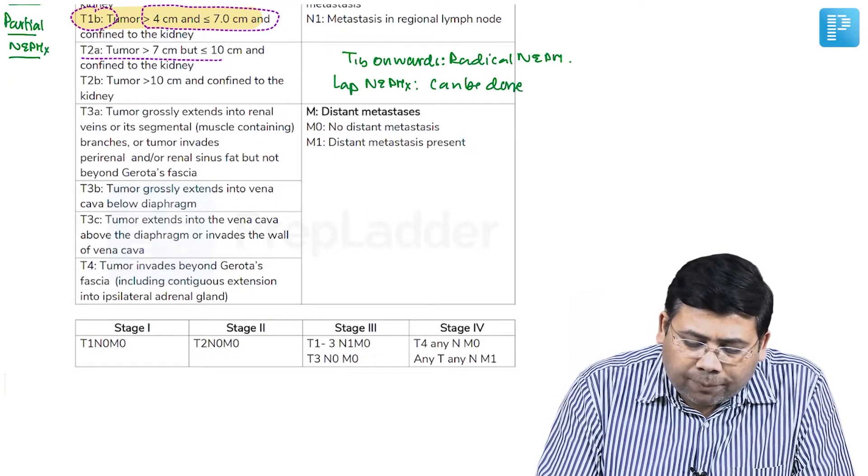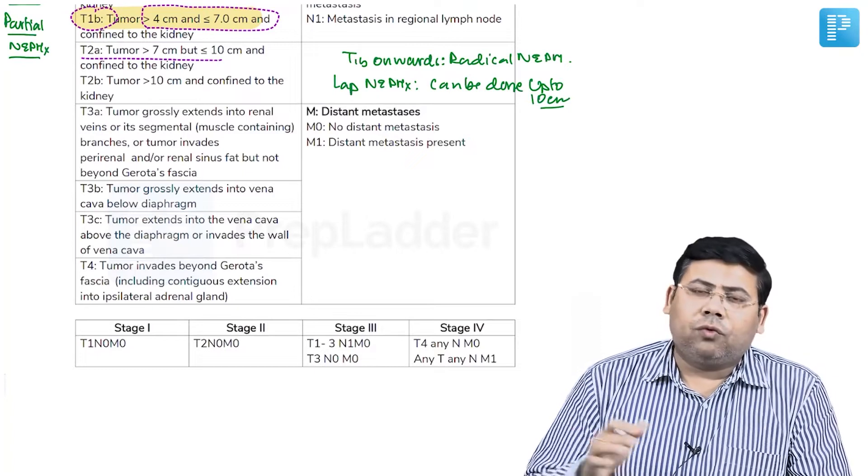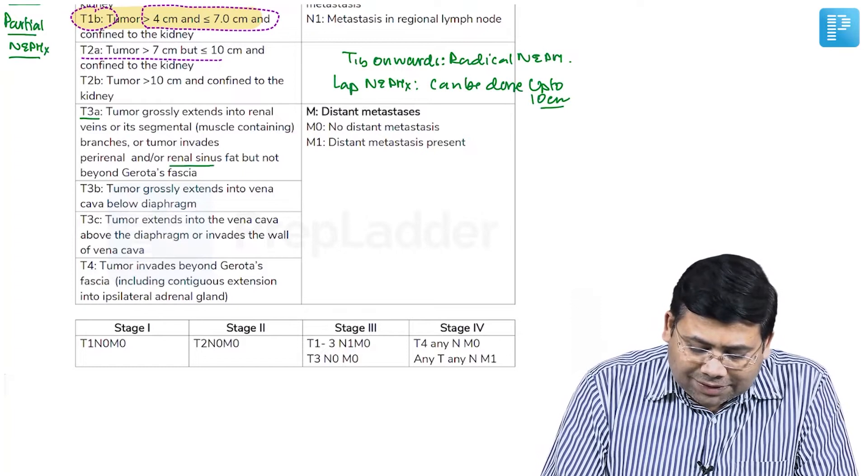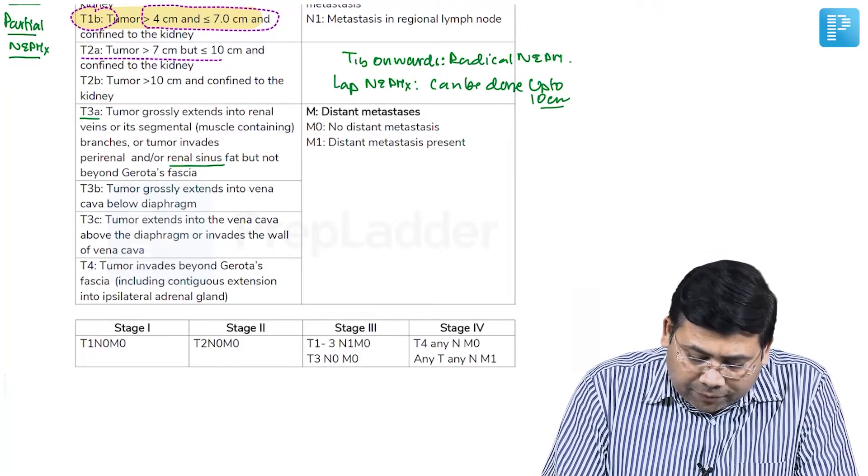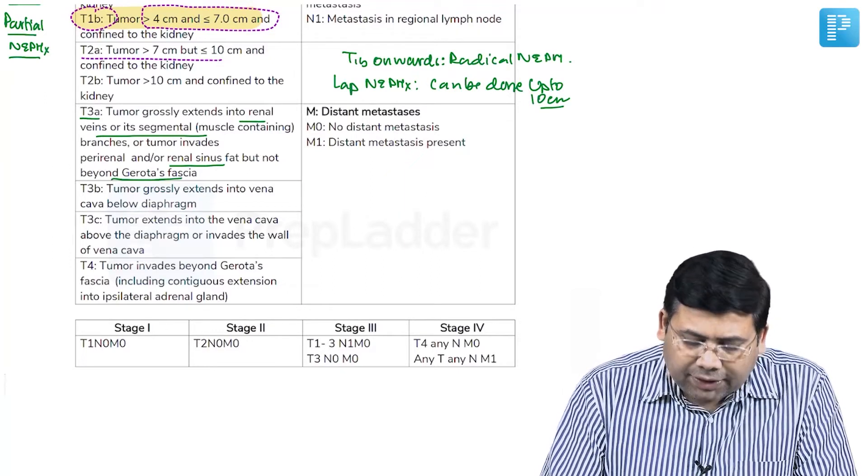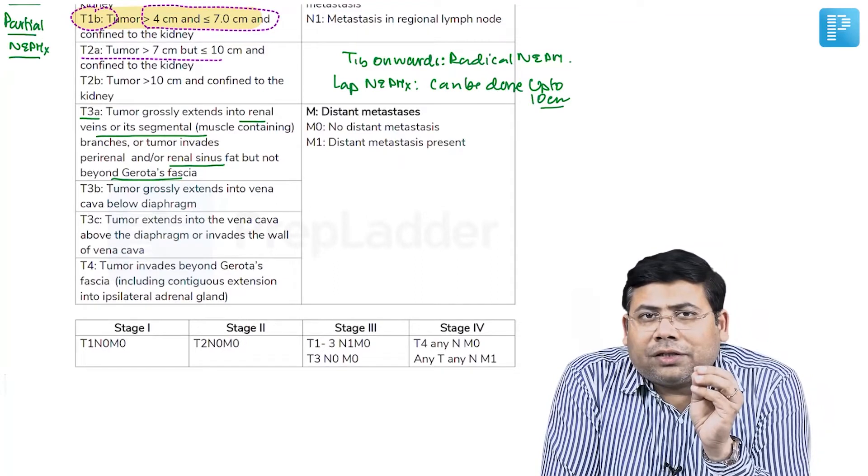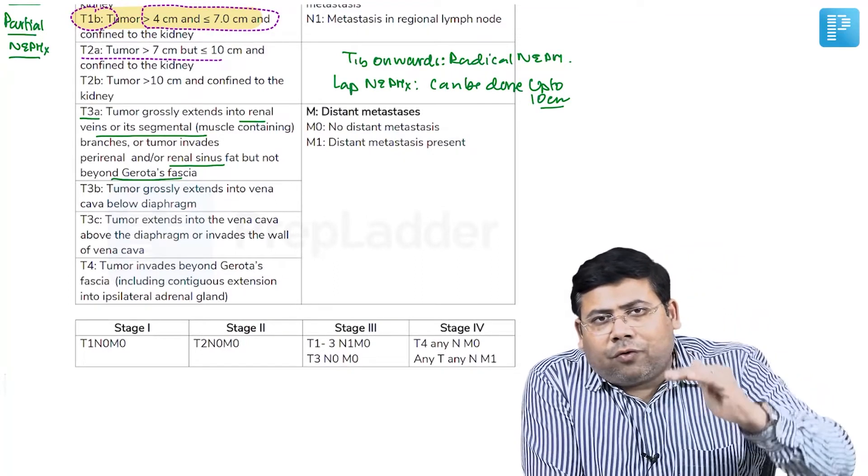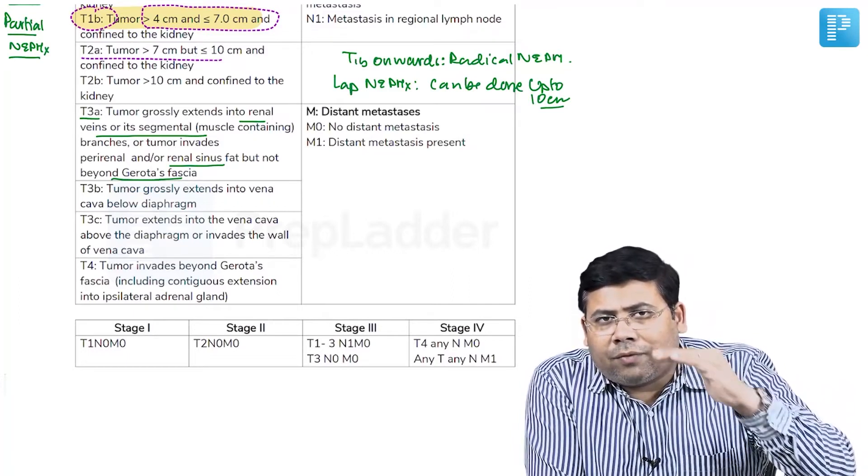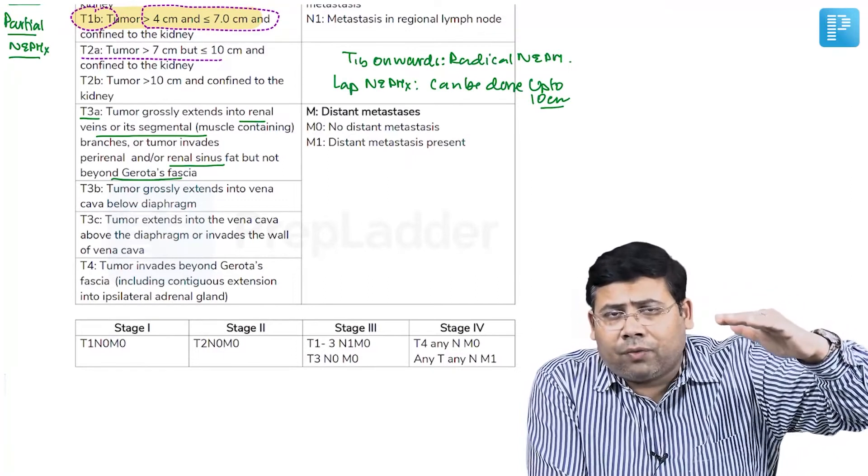Beyond 10 centimeters, we have to go for open approach. Then T3 is important. What are the important things? Renal fat, segmental vessels, and renal sinus. Invasion into the IVC is T3b or T3c, depending on whether the tumor thrombus extension is below the diaphragm (T3b) or above the diaphragm into the IVC (T3c).